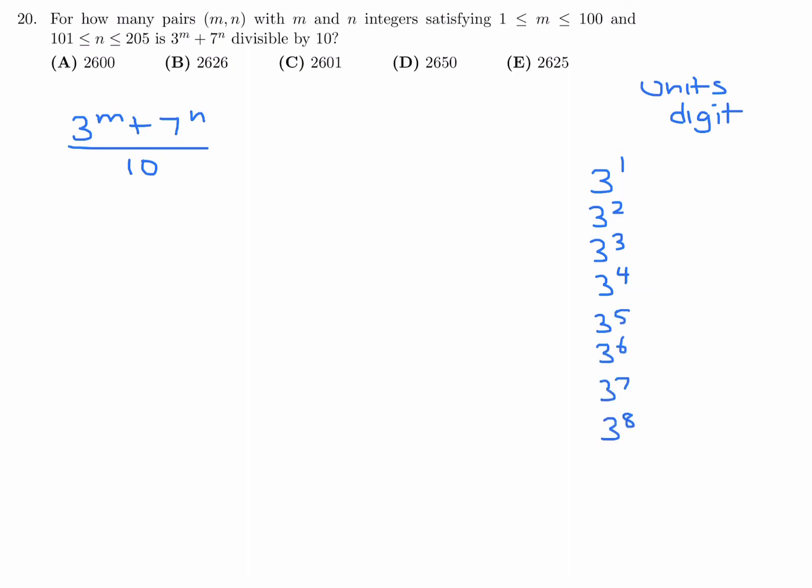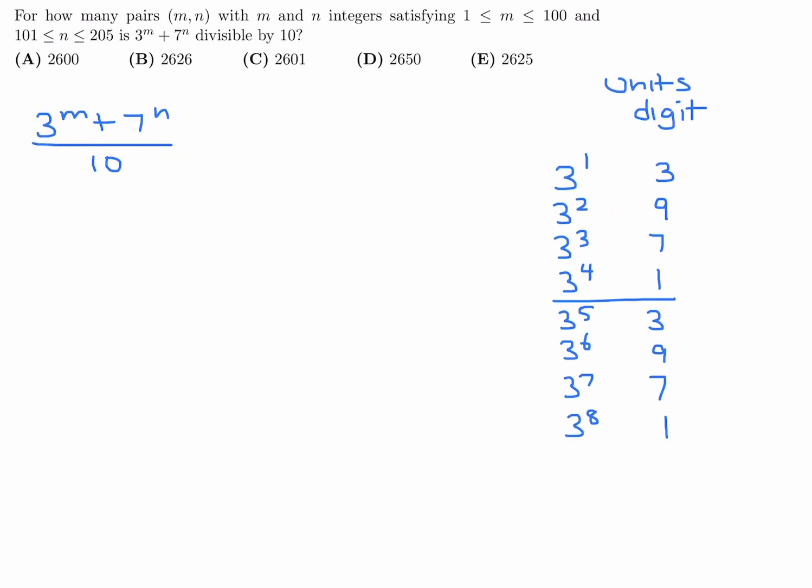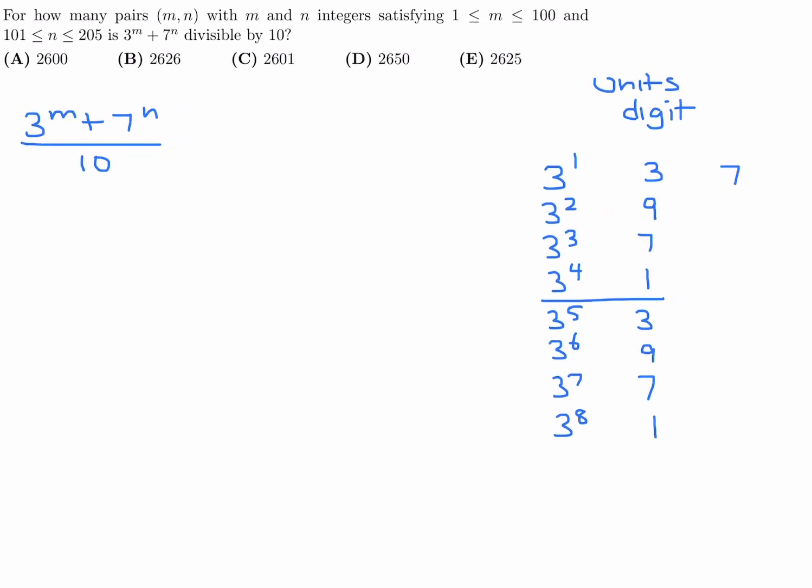So the first thing I'd like to do is illustrate that there's a pattern, and that pattern definitely helps us. So if I write down the unit's digit for the first few powers of 3, you'll see a pattern. I'm just writing the unit's digit, the last digit: 3, 9, 7, 1. 3, 9, 7, 1. And as you can see, it just keeps on going like that - 3, 9, 7, 1.